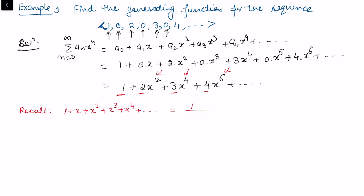First, recall: 1 + x + x² + x³ + x⁴ + ... = 1/(1 - x). If we do a replacement x → x², the series becomes 1 + x² + x⁴ + x⁶ + ...